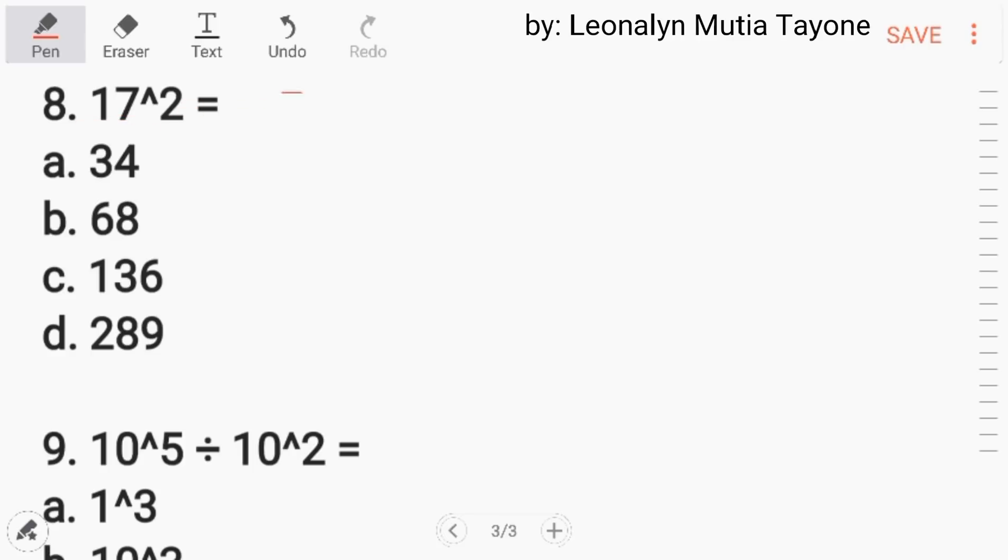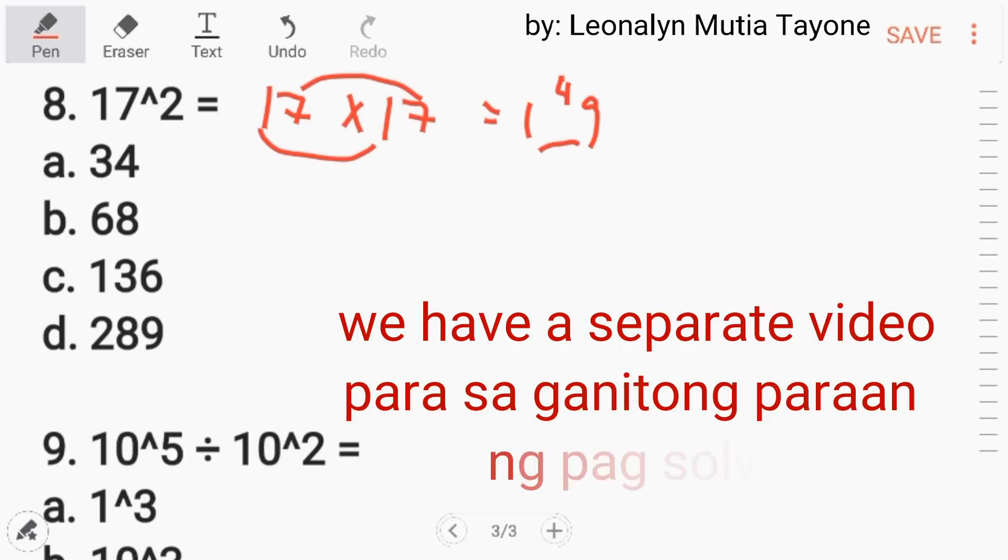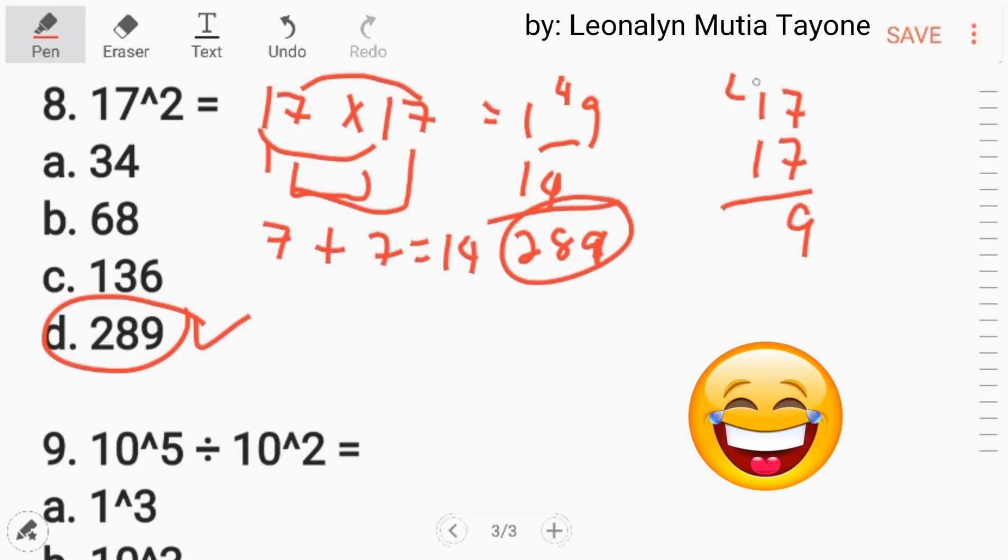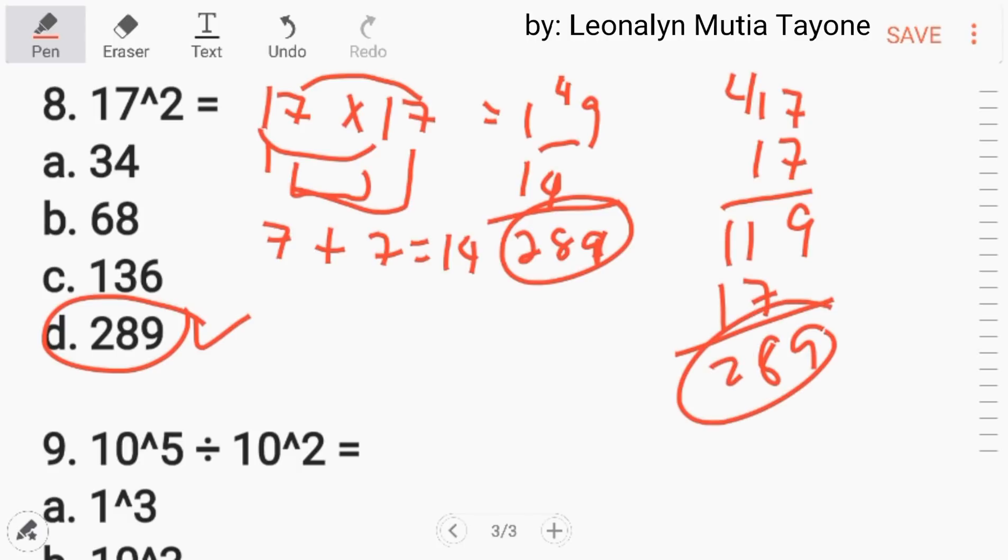Number 8. 17 to the 2nd power, and that is 17 times 17. So imultiply lang natin yan. 49 and this is 1. So 7 times 7, that is 7, plus 7 times 7 that is 7. So 7 plus 7 is 14. So the answer is 289, letter D. Another way sa pag-multiply, ganun lang yung vertical style. 1, 8, 2. 289.